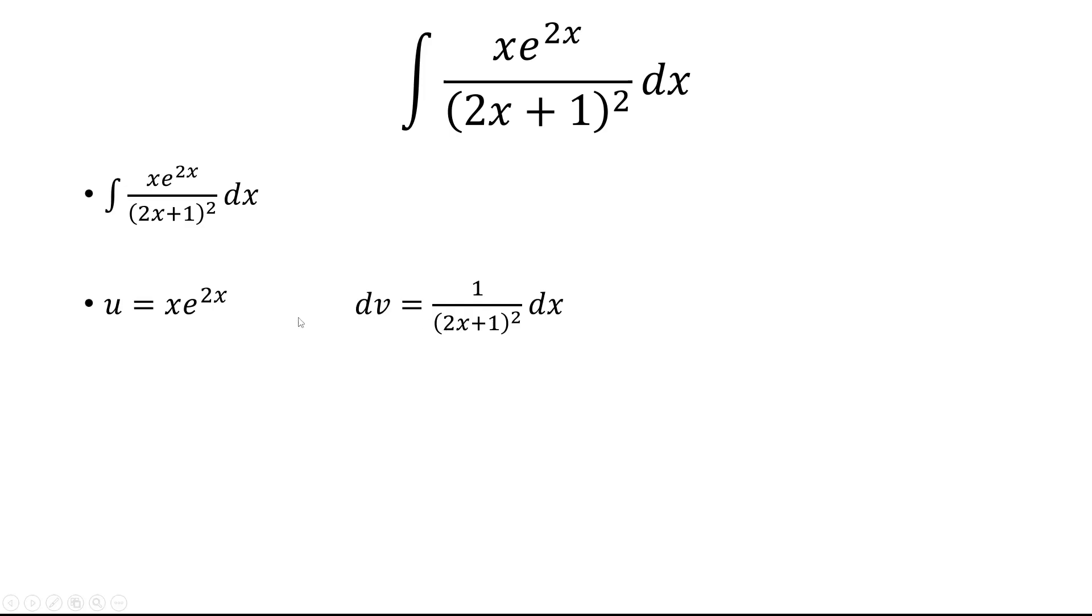We're going to use integration by parts, so u is going to be x times e to the 2x, dv is 1 over 2x plus 1 squared.